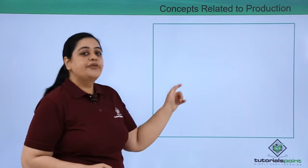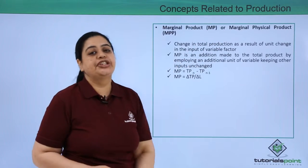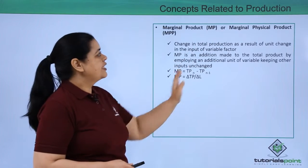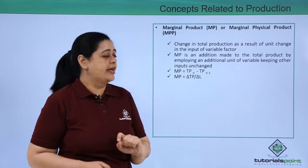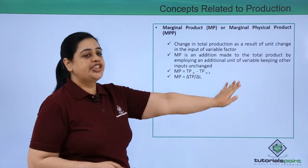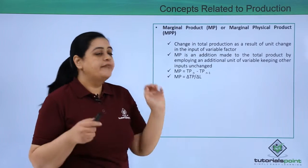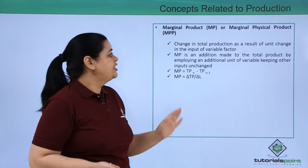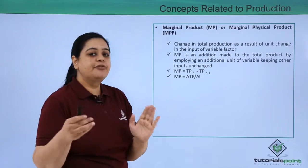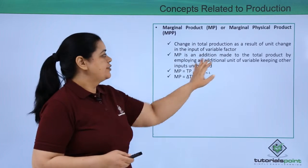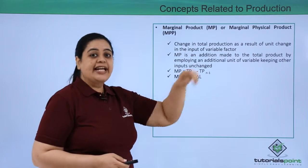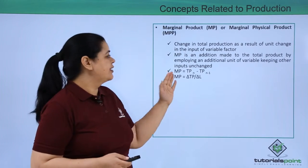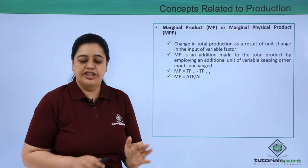Now let's quickly move further. Then comes the marginal product. So it is also known as marginal physical product, that is MPP. What is that? This is the change in the total production because of a change in the unit in the input of variable factor. So MP is addition that is being made to the total product by employing an additional unit of variable keeping other inputs change.